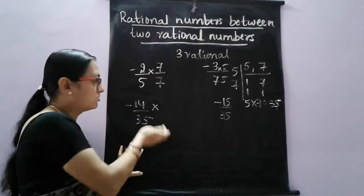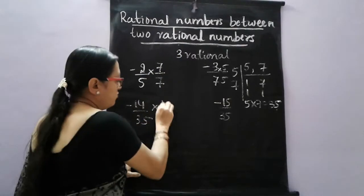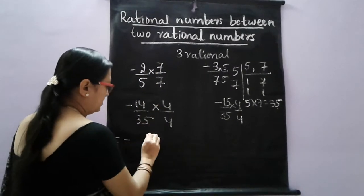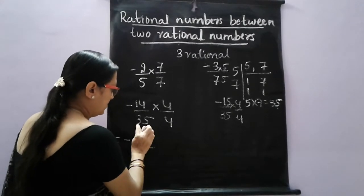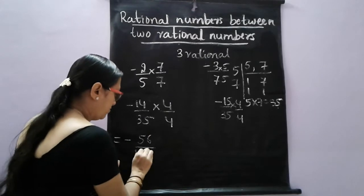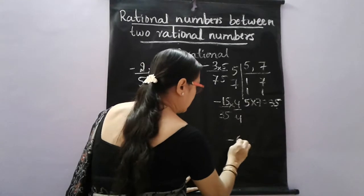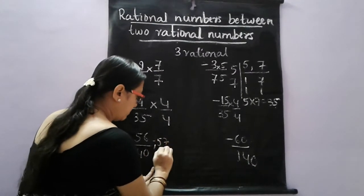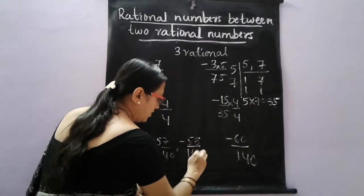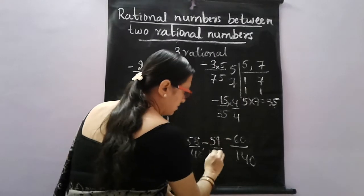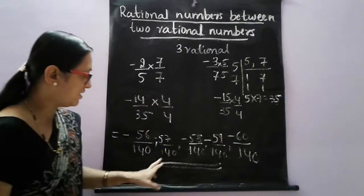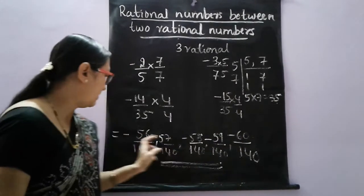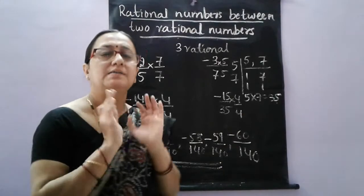Now we want 3 rational numbers, so multiply numerator and denominator by 4 and 4. This gives minus 14 × 4 = minus 56 by 140, and minus 15 × 4 = minus 60 by 140. The rational numbers between them are: minus 57 by 140, minus 58 by 140, and minus 59 by 140. So we got 3 rational numbers between minus 56 by 140 and minus 60 by 140. All examples follow the same method.